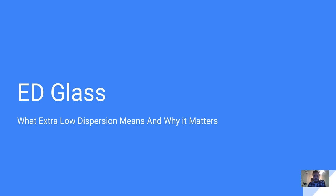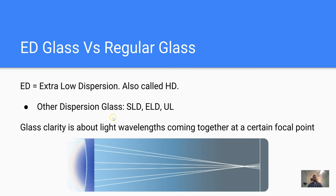Good evening everybody. We're going to go into detail about ED glass. I made a blog post about it, but I also want to do a nice little presentation — probably five or ten minutes. If you like reading better, go to the blog post; there's a lot of good information there. ED glass stands for Extra Load Dispersion glass. You've probably heard the term HD glass — that's synonymous with ED glass. Athlon Optics, a brand we carry, calls it HD glass, but ED glass and HD glass mean the same thing.